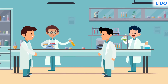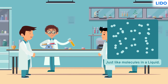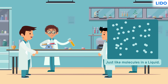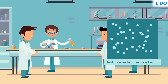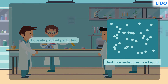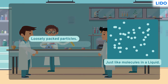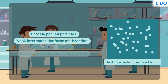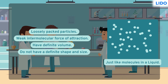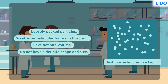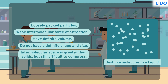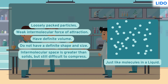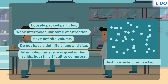Science practical was more like liquid. Students were allowed to move freely in the lab, but no one could leave the lab. Molecules in a liquid are loosely packed with a weaker force of attraction. This means liquids do not have a definite shape and size. They do, however, occupy a specific amount of space, which is very difficult to compress, a lot like solids.